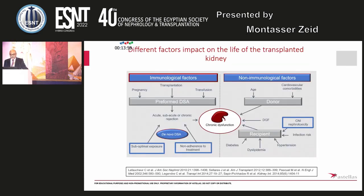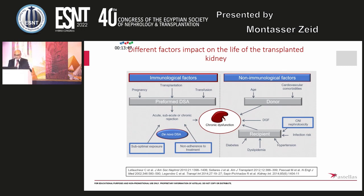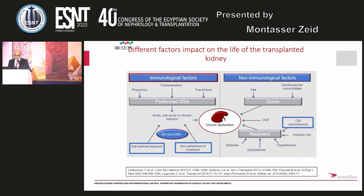There are different factors which impact on the life of a transplanted kidney: immunological factors and non-immunological factors. Among the immunological factors are pregnancy, transplantation, and previous blood transfusion, which results in pre-formed donor-specific antibodies, and suboptimal exposure and non-adherence to treatment, which results in de novo DSA, and also intrapatient variability of exposure — all of which will result in acute, subacute, or chronic rejection.